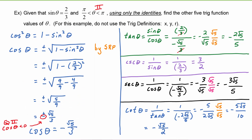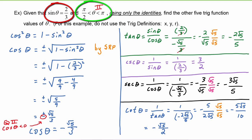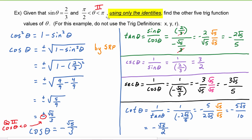By using the value of sine of theta and the fact that we were in quadrant two, we were able to find the other five trig function values of theta using only the identities. Notice there's no x, no y, and no r — we did not use the trig definitions; we practiced using only the identities.